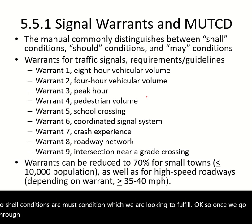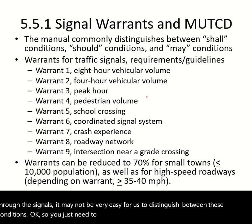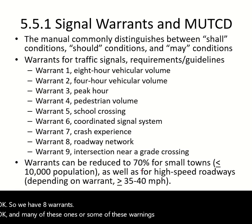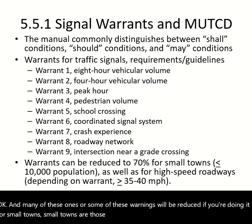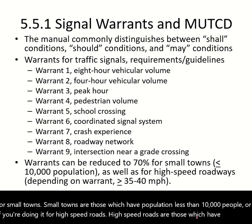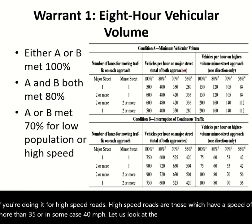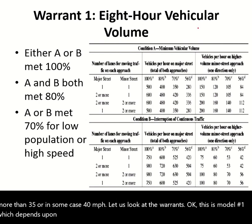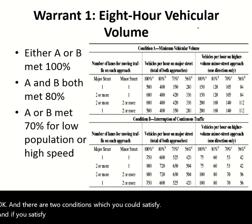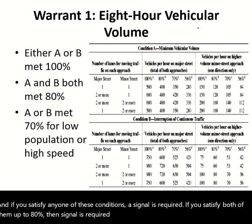Warrant 1 is based on eight-hour vehicular volume. You take the volume for eight peak hours of the day. There are two conditions — if you satisfy any one of them a signal is required; if you satisfy both up to 80 percent, a signal is required; if you satisfy any one up to 70 percent for small towns or high-speed roads, a signal is also required.